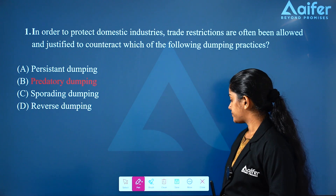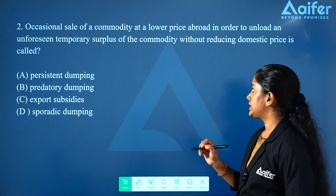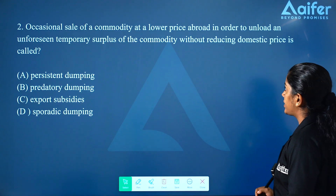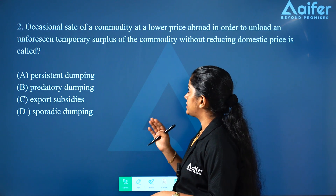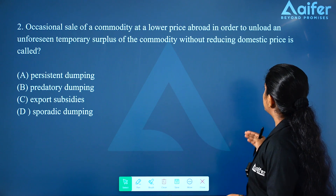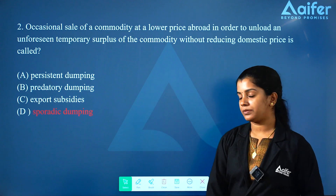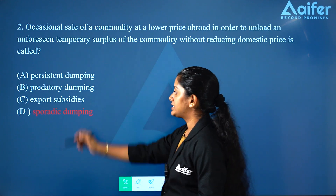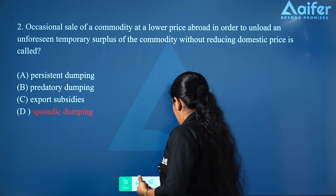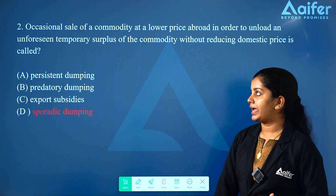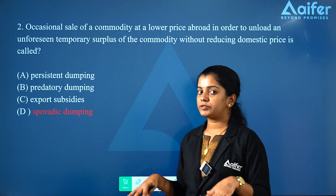Predatory dumping. The occasional sale of a commodity at a lower price abroad in order to unload an unforeseen temporary surplus of the commodity without reducing domestic prices — this is what we need for sporadic dumping. Because we need the occasional sale, we call it sporadic dumping. It is a temporary situation dealing with unsold commodities in the foreign market.